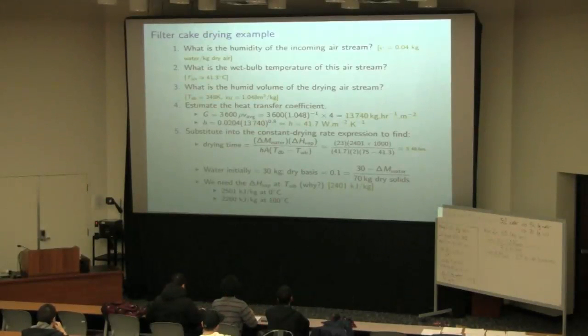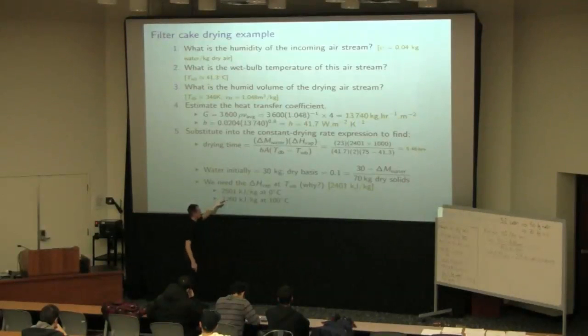Substitute that into the formula for G, and you get 13,740 kilograms per hour per meter squared. So it's not SI, and the reason for that is because this correlation for the heat transfer coefficient requires G to be in those units. When we substitute that into that formula, h equals 41.7 joules per second per meter squared kelvin. So we're almost ready to estimate time. The final piece of information we need is the heat of vaporization. And the key here is that heat of vaporization is calculated at the wet bulb temperature. The heat of vaporization is the latent heat to convert liquid to vapor, and that's happening at that liquid vapor interface, which is the wet bulb temperature.